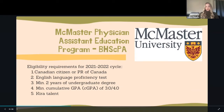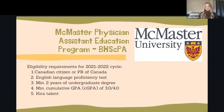In terms of eligibility, you have to be a Canadian citizen or a permanent resident of Canada. If you are not, then you need to take an English language proficiency test — if you didn't do your undergraduate degree in Canada or you're not a Canadian citizen or permanent resident. You also have to have a minimum of two years of an undergraduate degree, which is 10 credits, in order to be eligible to apply.